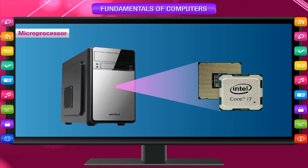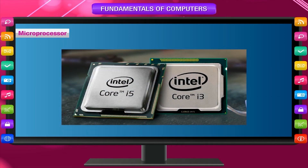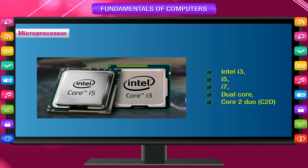The microprocessor is also known as the CPU. It is the main chip in the computer that performs millions of calculations every second. The speed of a computer system depends upon its microprocessor. Intel i3, i5, i7, dual core, core 2 duo, and C2D are the commonly used microprocessors these days.